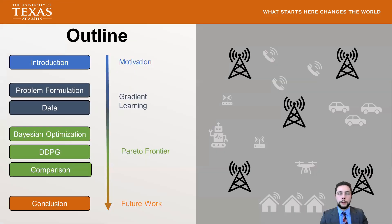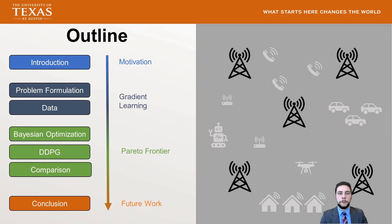Today I'm going to be introducing the concept of CCO, or coverage and capacity optimization, and why automated CCO is so important. Then we'll talk about how we formulated the problem, what the data looks like, and look at two algorithms — Bayesian optimization and DDPG, a deep reinforcement learning algorithm — comparing their sample efficiency and Pareto frontiers. Afterward, we'll wrap up with a conclusion and some future work.